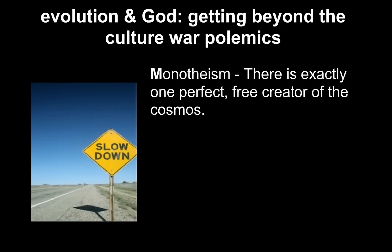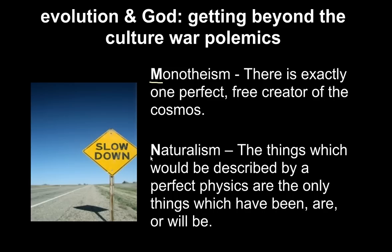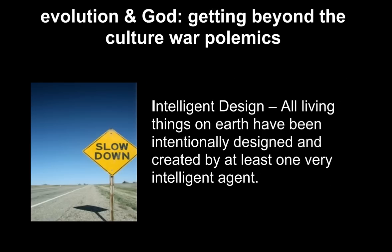Monotheism — there's exactly one perfect free creator of the cosmos. I've put the first letter M in bold because I'm going to use the abbreviation M for this view. Then we have naturalism: the things which would be described by a perfect physics are the only things which have been, are, or will be — abbreviated N. And then we have the thesis of intelligent design: all living things on earth have been intelligently designed and created by at least one very intelligent agent — we'll call that I.